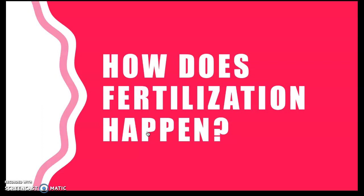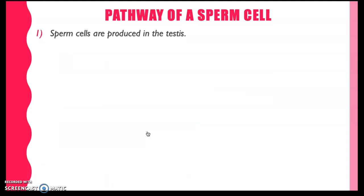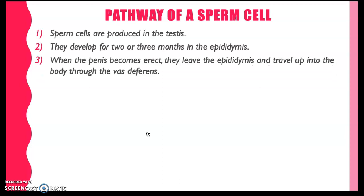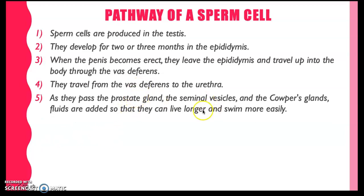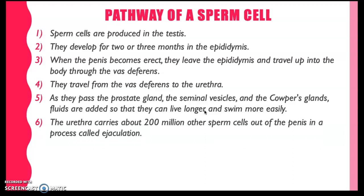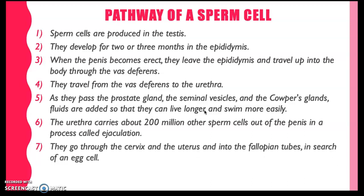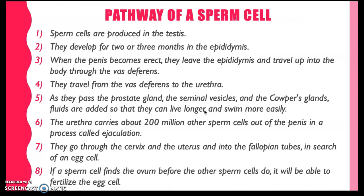Let's look at the pathway of the sperm cell going to the egg cell. Sperm cells are produced in the testes but do not mature there — they mature in the epididymis for two to three months. During copulation, when the penis becomes erect, they leave the epididymis and travel through the vas deferens, the connection between the testes and the urethra. Before being expelled from the male's body, sperm passes through the seminal vesicle, the prostate gland, and the Cowper's gland, which produce fluids needed by the sperm cell to swim more easily and live longer. About 200 million sperm cells are carried out by the urethra in the process called ejaculation. These sperm cells with the semen enter the cervix and the uterus and go to the fallopian tube in search of the egg cell. If the sperm cell finds the ovum before other sperms do, it will be able to fertilize the egg.